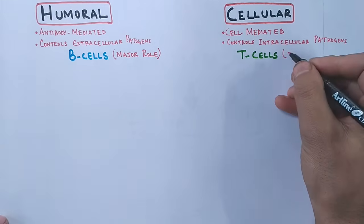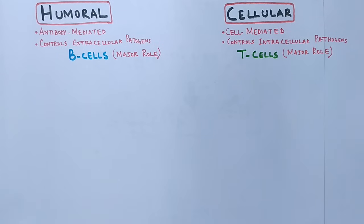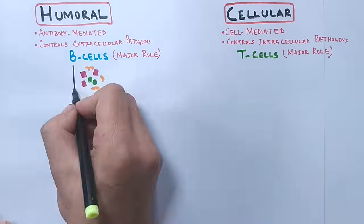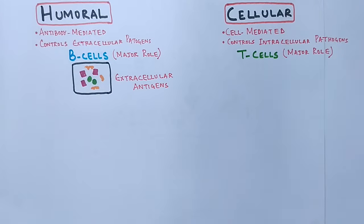Now let's see humoral immunity in detail first. In humoral immunity, when there is presence of any extracellular antigen in our body, it triggers the immune system to defend against this antigen or pathogen, and the B-cells of our immune system come into action.